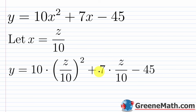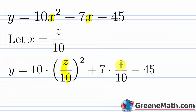Now to show why slide and divide is valid using a substitution technique. Online proofs are often hard to follow, so I'll use our specific example. Let y = 10x² + 7x − 45. We'll substitute x = z/10, replacing each x in the trinomial with z/10, then simplify.